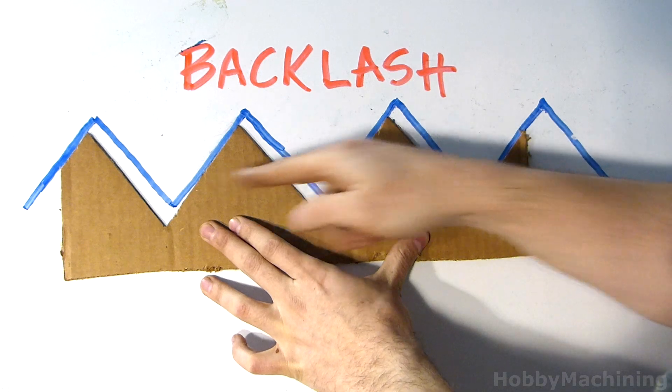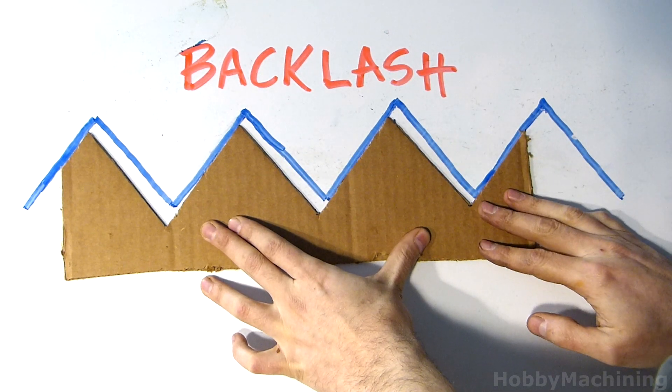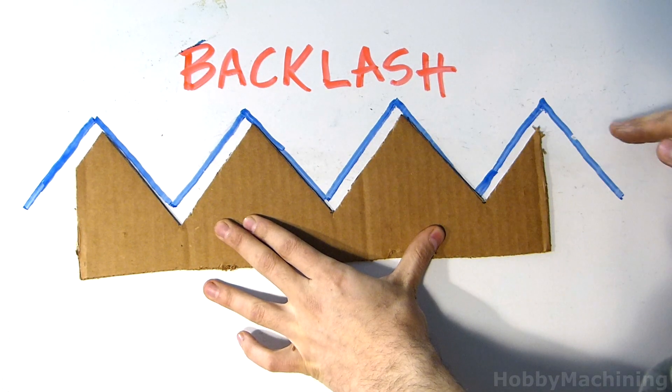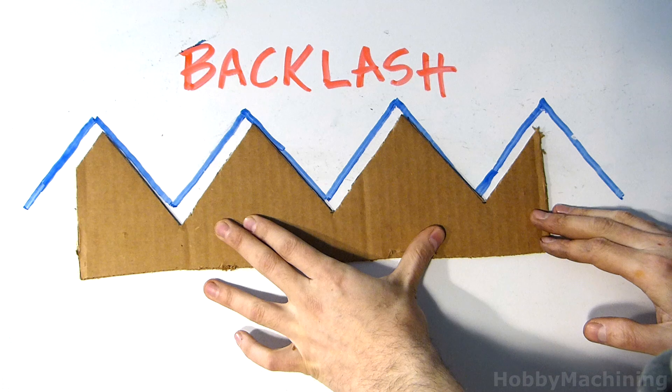Where you're going to see backlash again is when you reverse direction. You start coming this way, we're encountering the backlash and there we've taken it up and now our upper part will start moving smoothly.